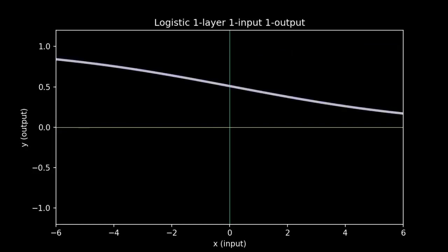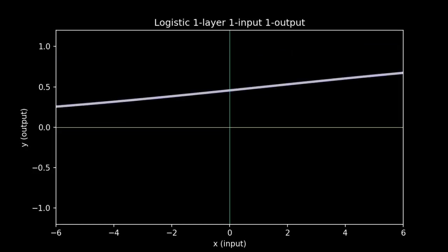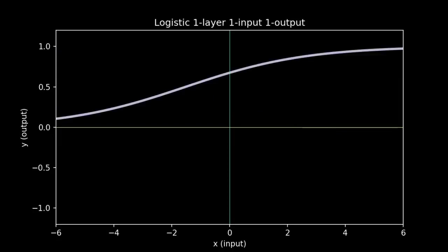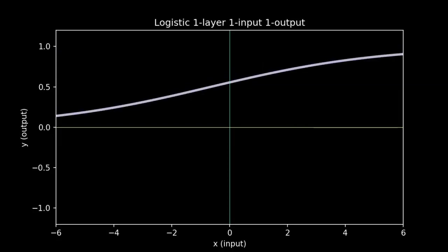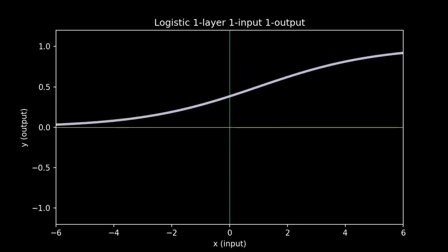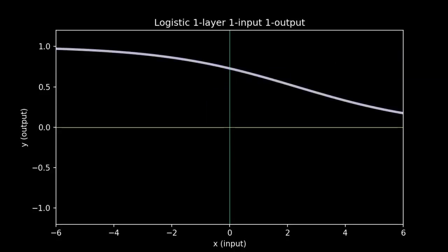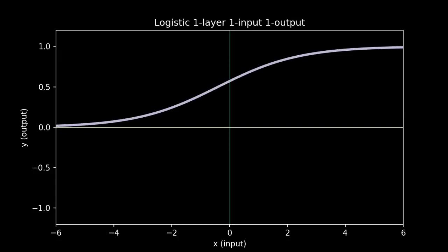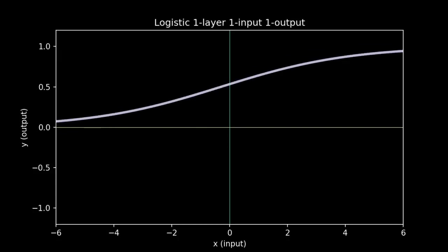One notable characteristic of logistic functions is that they live between 0 and 1. For this reason, they're also called squashing functions. You can imagine taking a straight line and then squashing the edges and bending and hammering it down so that the whole thing fits between 0 and 1 no matter how far out you go.